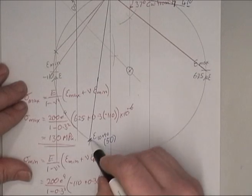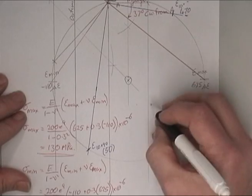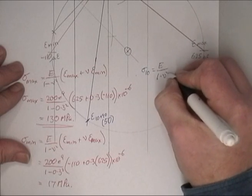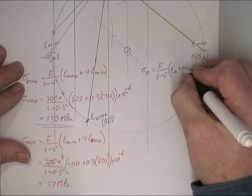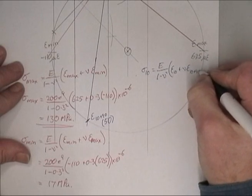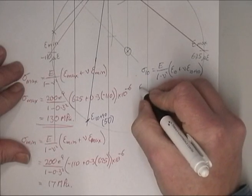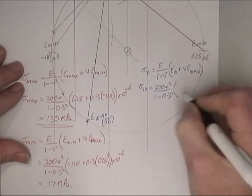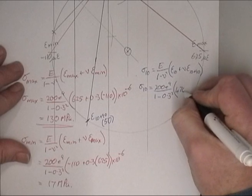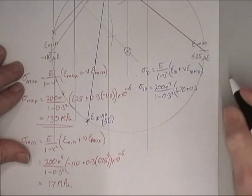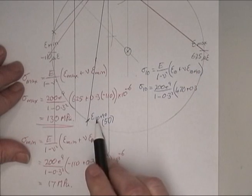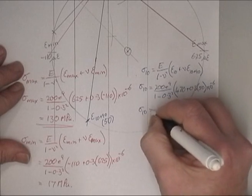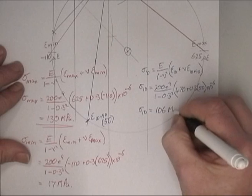This is my point at 90 degrees away from the one that I want. So, as before, stress at 10 will be equal to E over 1 minus V squared times strain 10 plus V strain at 90 degrees to that. So stress 10 is 210 to the 9, 1 minus 0.3 squared, strain 10 is 470 plus 0.3 times the strain at 90 degrees away from that, which is this point here, which is at 50, times 10 to the minus 6. So stress 10 is equal to 106 megapascals.